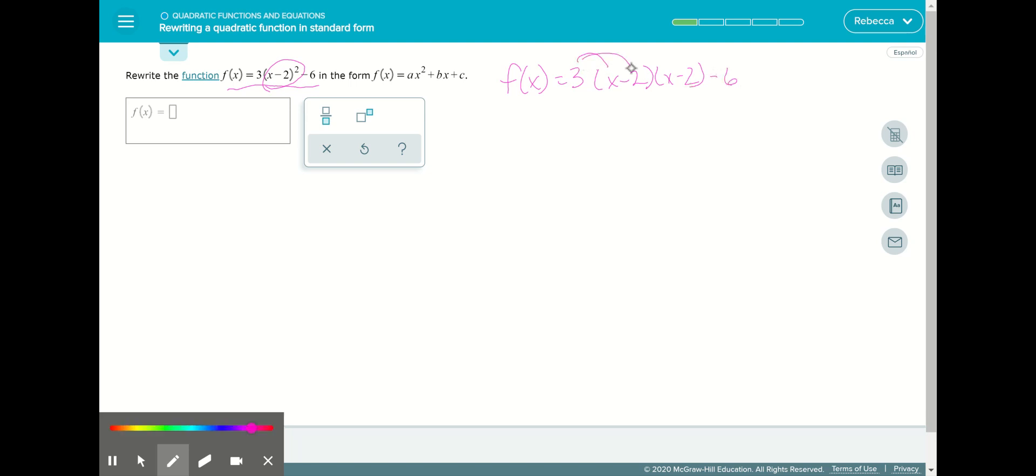So we'll go ahead and distribute the 3 on the first parentheses. So we'll have 3x minus 6. And that has to stay in parentheses because we haven't yet multiplied it onto x minus 2.